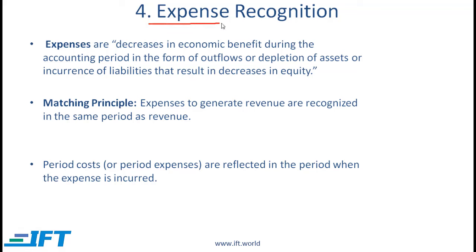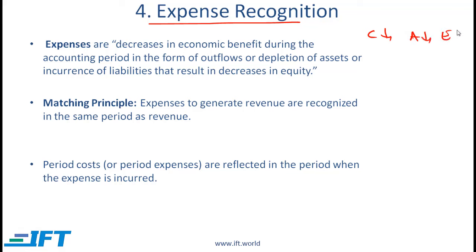Moving now to expense recognition. Expenses are decreases in economic benefit during the accounting period in the form of outflows or depletion of assets or incurrences of liabilities that result in decreases in equity. This is a complicated way of expressing a very simple concept. When you pay rent, your cash, which is an asset, comes down — so that's an expense. When the asset comes down, that means your equity is coming down, assuming the liability is unchanged.